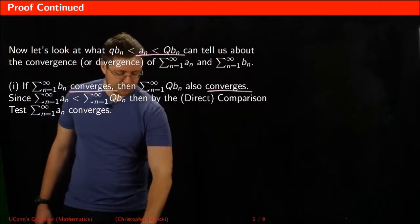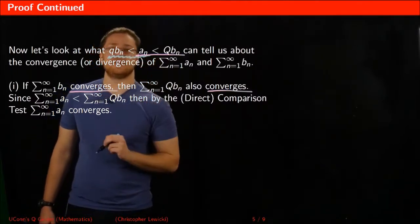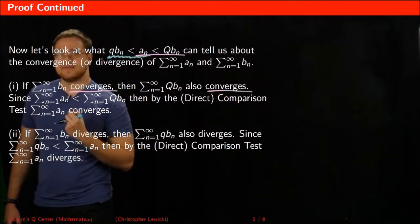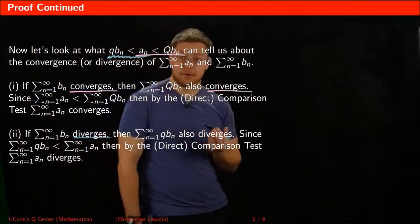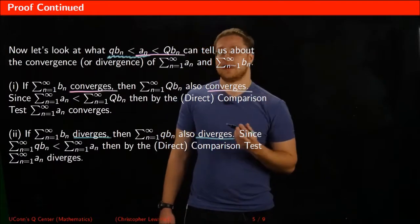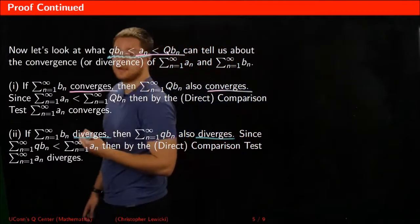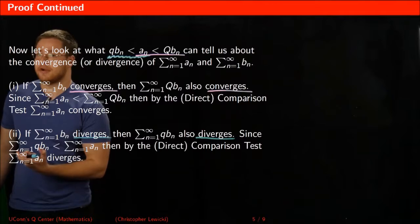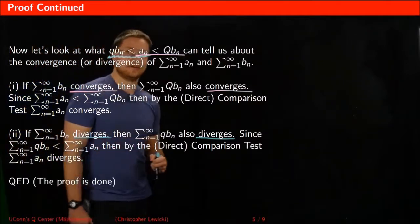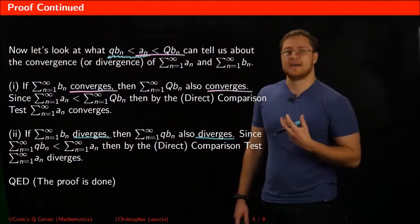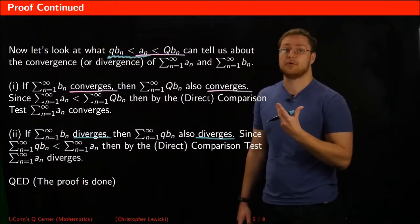Now looking at the other part of the inequality: lowercase q times bₙ is strictly less than aₙ. If we assume the series bₙ diverges, then lowercase q times bₙ also diverges — again, lowercase q is just a constant, and multiplying by a constant doesn't change convergence or divergence. By the comparison test, if the smaller of two series diverges, the greater also has to diverge. The proof is now done: both series have to converge or they both have to diverge.